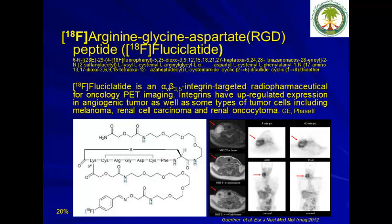RGD-F18 peptide is a peptide used in oncology for PET imaging to image integrin-targeted radiopharmaceuticals and angiogenic tumors, as well as other tumor types including melanoma, renal cancer, carcinoma, and oncocytoma. Production is straightforward; however, the yield is only 20%.